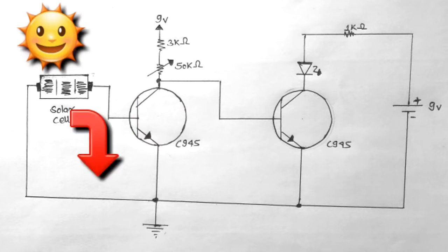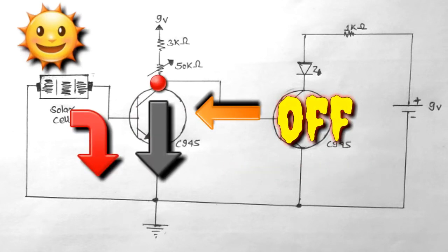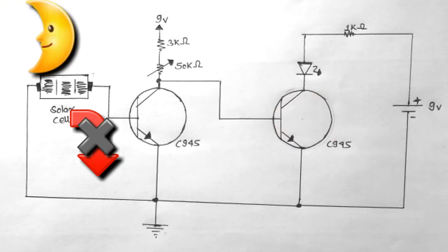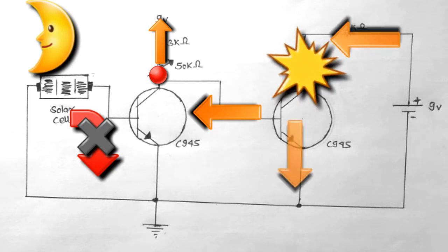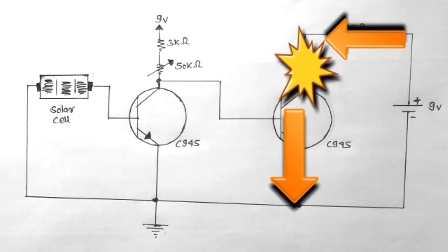This way when light falls onto the solar cell, the base of the main transistor is pulled down to ground and the transistor stays off. However, when there is no light over the solar cell, the base of the main transistor is pulled up to VCC, turning it on and activating the circuit. This is how it looks like.